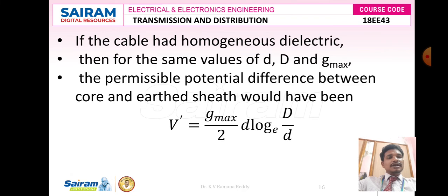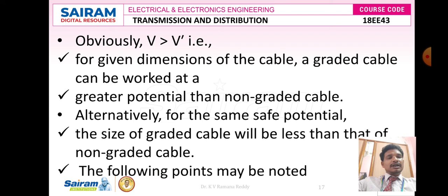If the cable had a homogeneous dielectric with the same values of d, D, and Gmax, the permissible potential difference would be V' = (Gmax/2) · d · ln(D/d). Obviously V > V', because the initial insulating material has higher electrical stress compared to outer layers for the same cable dimensions. A graded cable can therefore be worked at a greater potential than a non-graded cable. Alternatively, for the same safe potential, the size of the graded cable will be less than that of a non-graded cable.